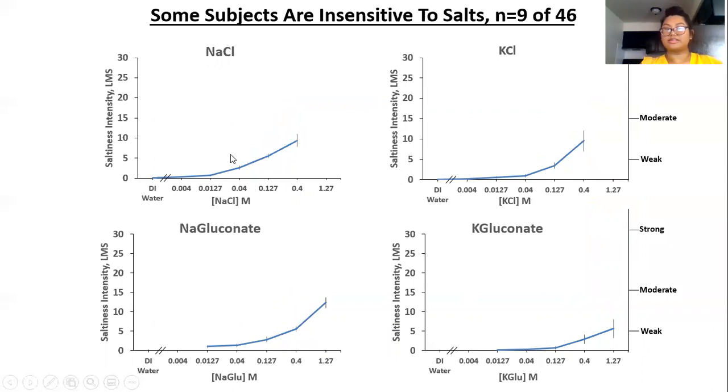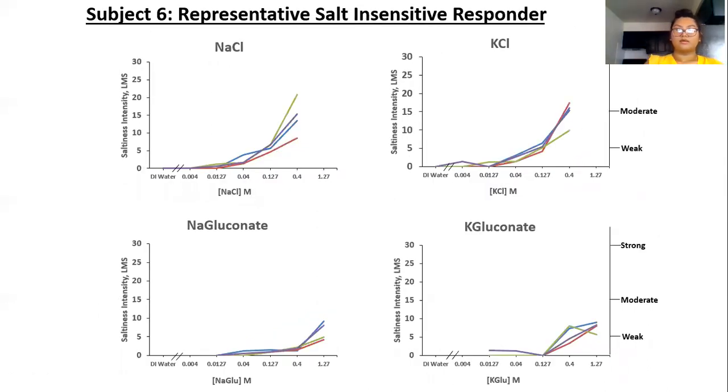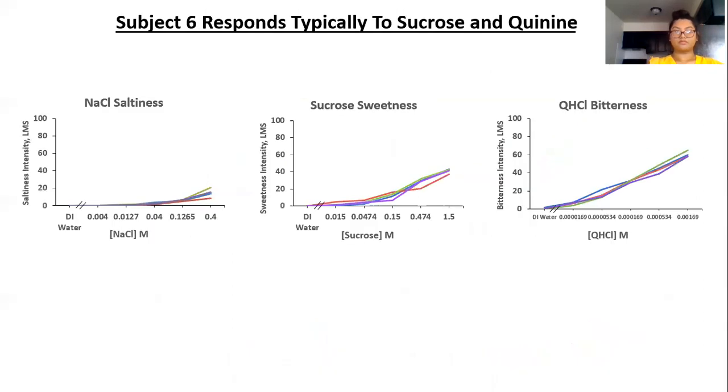We also found that some subjects are insensitive to salts, meaning that they cannot taste the salts that strongly in the saltiness of them. Out of our 46 subjects, there were nine subjects that are insensitive to salts and that is 20% of them. Here is another individual representative, as our last slide was the group averages. We chose this subject because their results closely mimic the results of our group averages. We know that this person is salt insensitive, as you can see that they respond very low to the saltiness of sodium chloride. But when we rate their sweetness of sucrose and their bitterness of quinine, they rate them typically.